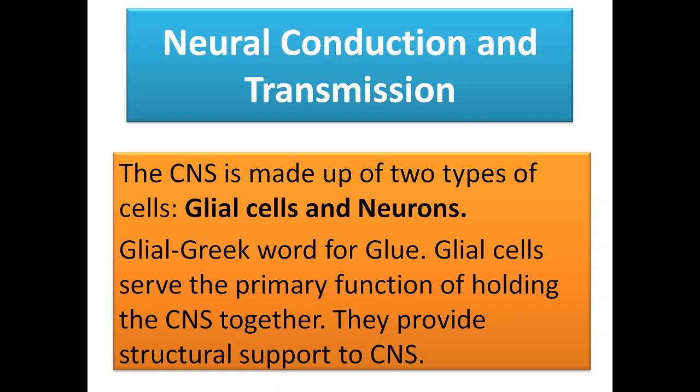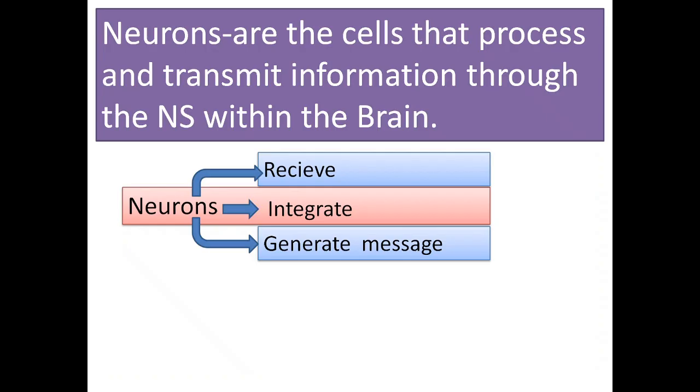Neural conduction and transmission. The central nervous system is made up of two types of cells: glial cells and neurons. The word glial is derived from the Greek word meaning glue. Glial cells serve the primary function of holding the central nervous system together and they provide structural support to the central nervous system.